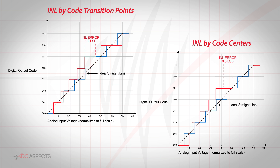It is also important to note that there are several ways to calculate INL. The INL can be specified by the code transition points, also known as low side transition, or through the code centers. Comparing the two figures, it can be seen the INL value will be somewhat smaller using the code center method.